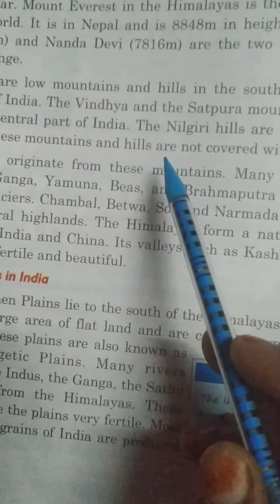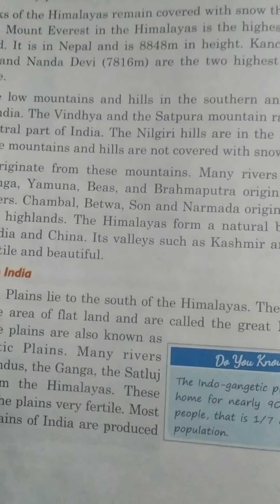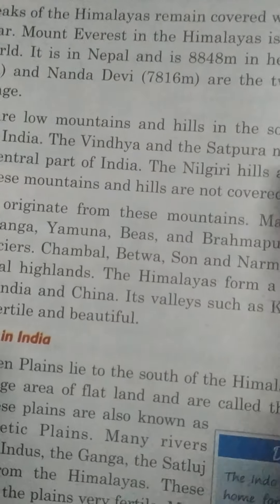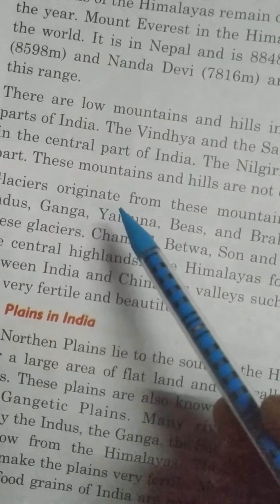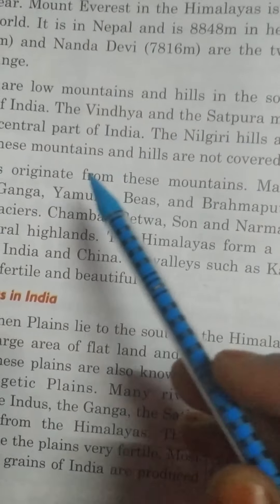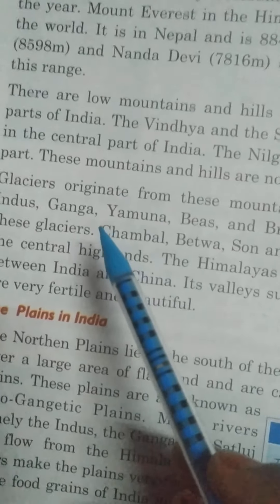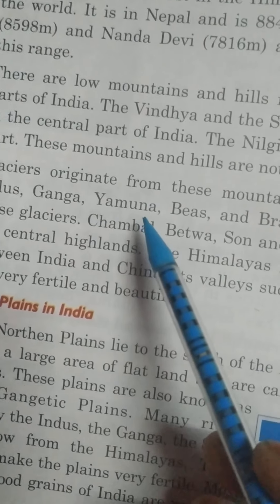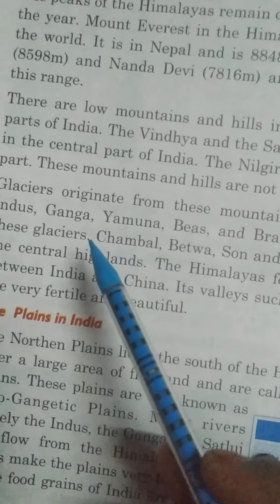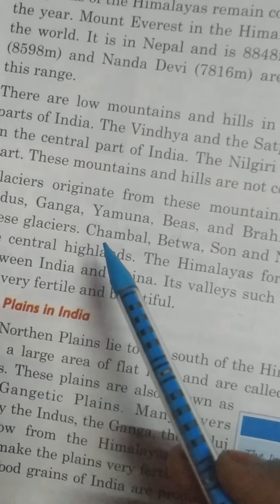These mountains and hills are not covered with snow. इंजी जो mountains और hills हैं वो बर्फ से ढकी हुई नहीं रहती हैं. Glaciers originate from these mountains. इन mountains से glaciers बनते हैं. Many rivers such as Indus, Ganga, Yamuna, Beas, and Brahmaputra originate from these glaciers. जो हमारी ये नदियां हैं वो इन glaciers से बनती हैं.